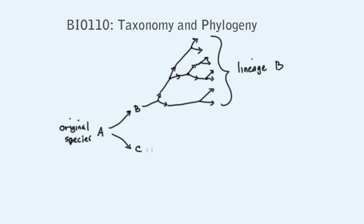We can call the whole array of organisms descending from species B lineage B. Meanwhile on the other side, species C gives rise to a whole family of species in lineage C.